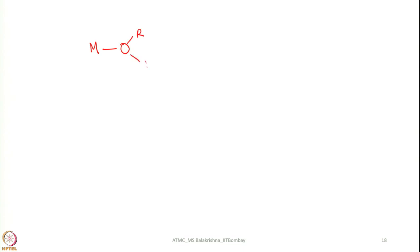For example, if you take alcohols — aryl alcohols or alkyl alcohols — they can be readily deprotonated and reacted with the transition metal to form corresponding alkoxides or aryl oxides. Let me consider a general reaction. Initially this happens and later H+ can come out to form the alkoxide product.